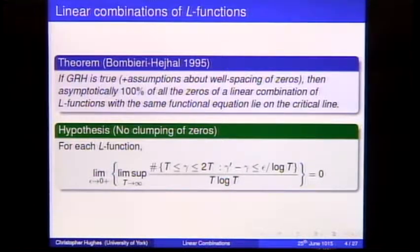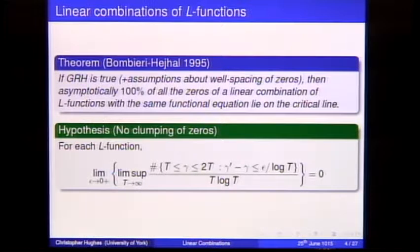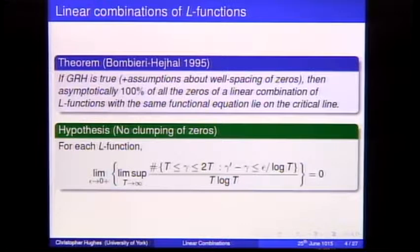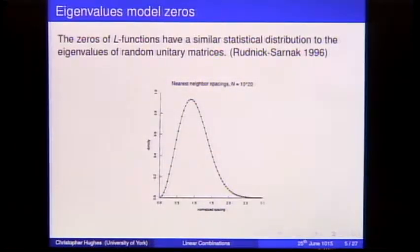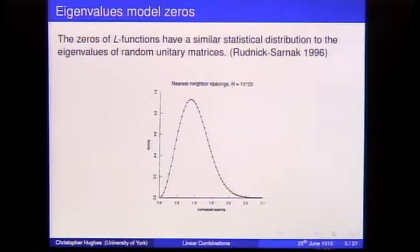The assumptions they need: GRH is absolutely crucial. The other assumption counts pairs of zeros that are closer together than expected — epsilon here is arbitrarily small — and they don't want too many of these clumps. As is well known from random matrix theory, the zeros of L-functions are modeled by eigenvalues of random unitary matrices.